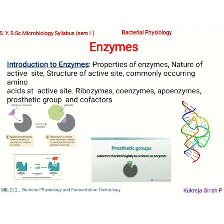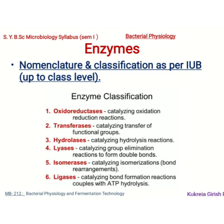To start with bacterial physiology, the first unit is on enzymes. We will be introduced to these biocatalysts which catalyze the entire metabolic reactions taking place inside any cell. We will study the properties of these enzymes, the nature of their active site — the pocket where the reaction takes place — its structure, and commonly occurring amino acids at these active sites. We will also know about coenzymes, apoenzymes, prosthetic groups, and cofactors which play a key role in enzyme catalysis, as well as ribozymes, which are RNA molecules acting as enzymes.